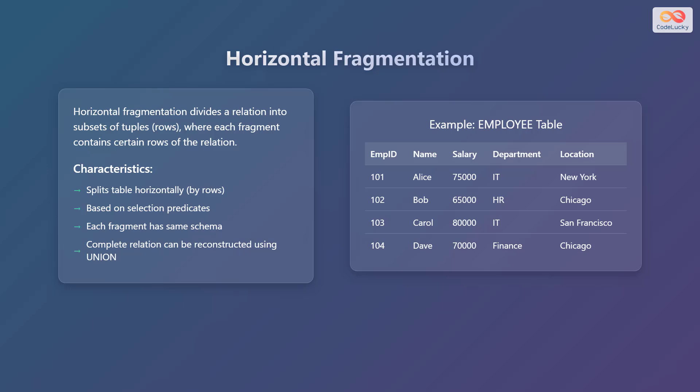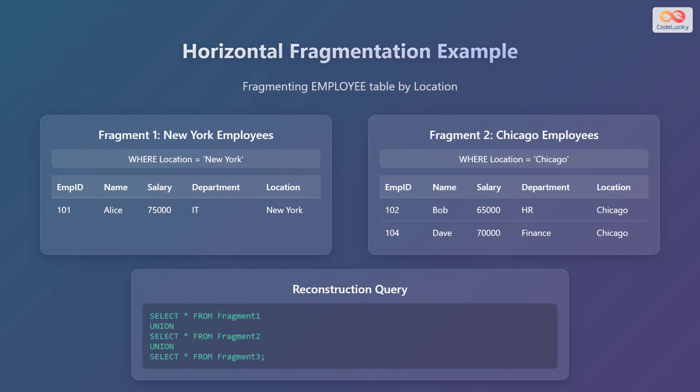Consider this example of an employee table with columns: employee ID, name, salary, department, and location. We can fragment the employee table by location, creating two fragments: one for employees in New York and another for employees in Chicago. Fragment 1 consists of New York employees based on the condition where location is New York. Fragment 2 includes Chicago employees based on the condition where location equals Chicago.